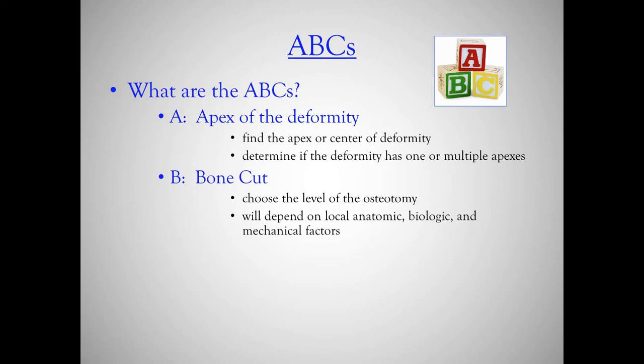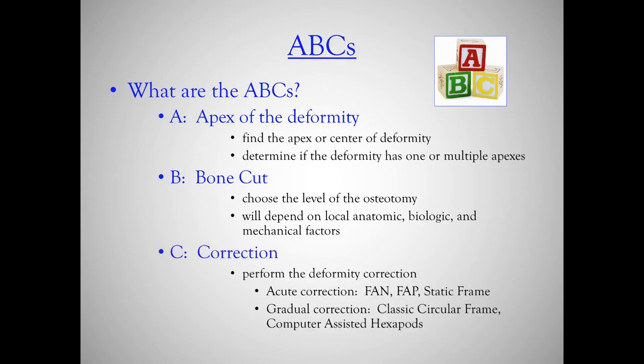B is the bone cut — choose your level of osteotomy. This is the one thing you are in control of as a surgeon. Local anatomic structures, local biology, and mechanical factors will all play a part in this choice. C is perform the correction — whether acutely with techniques such as fixture-assisted nailing or fixture-assisted plating, or gradual correction with classic circular frames or computer-assisted hexapods.